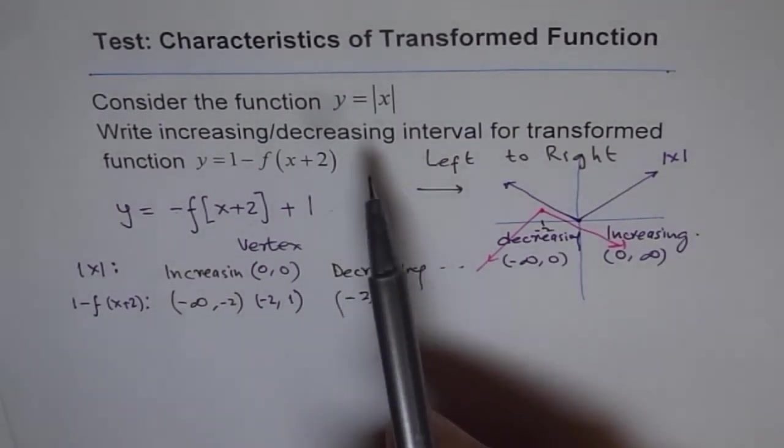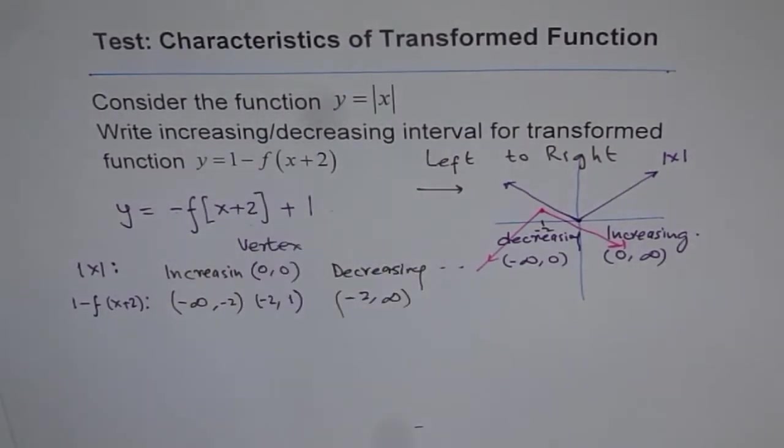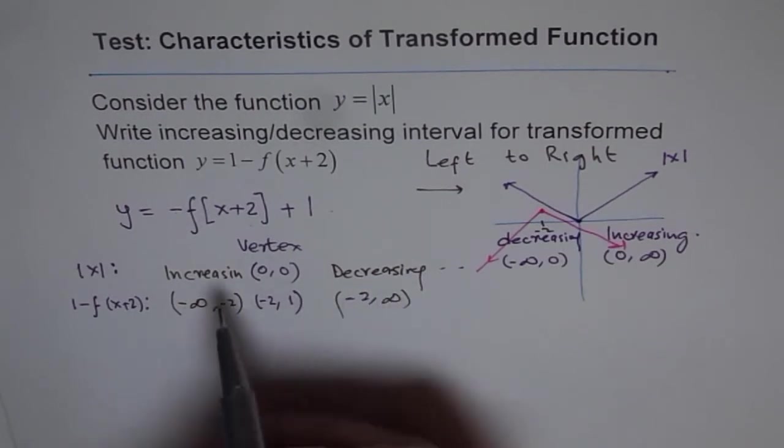So when you have a function, and if you see that is reflected on x-axis, right? Then the y-values, they swap, they become lesser instead of greater. Correct? So that causes the shift. Do you understand?